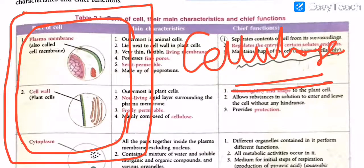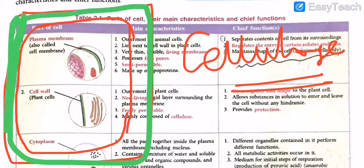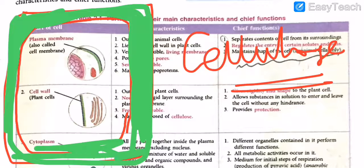The cell wall is mainly composed of cellulose, and cellulose is also a non-living substance. So if you get a give-reason question asking why the cell wall is dead — it is mainly composed of cellulose, which is a non-living substance. Its chief functions are: it gives rigidity and shape to the plant cell only, it allows substances in solution to enter and leave the cell without hindrance, and it provides protection to the cell because it is so rigid.